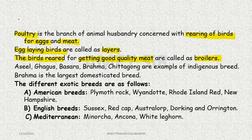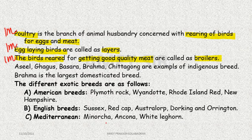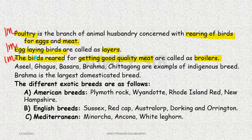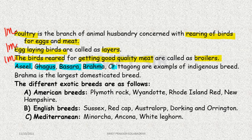Now here are three questions. When we talk about indigenous breeds, examples include Asyl, Ghugus, Basara, Brahma, and Chittagong - these are some examples of indigenous breeds.